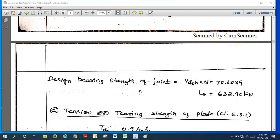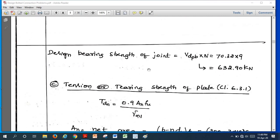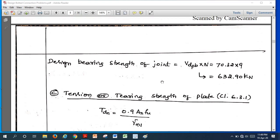If we want bearing strength of the joint, we should multiply the number of bolts, that comes out to be 632.90 kN. Now we should calculate the third one, tension or tearing strength of the plate according to clause 6.3.1.